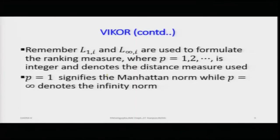Once you have computed these, you rank the alternatives and use the ranking to find the scoring for max and min, obtaining the overall ranking for A_i1, A_i2, and so forth across all alternatives. L1 and L∞ are used to formulate the ranking measures, where P can be 1, 2, 3, 4, till infinity — an integer denoting the distance measure used.